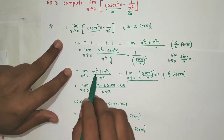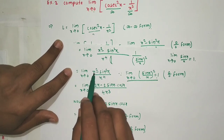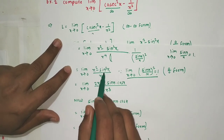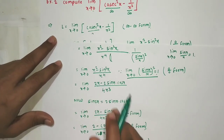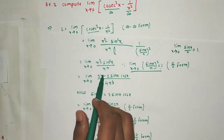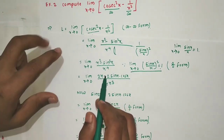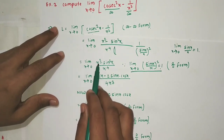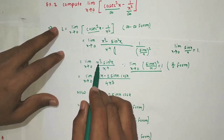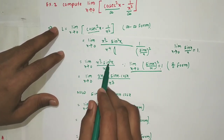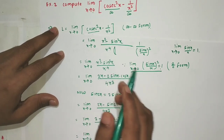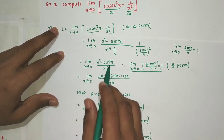After the adjustment, we have [x² - sin²x] / x⁴, multiplied by (sin²x/x²) which tends to 1. So the problem reduces to finding limit x→0 of [x² - sin²x] / x⁴, which is still 0/0 form. We apply L'Hôpital's rule: derivative of numerator is 2x - 2sin(x)cos(x) = 2x - sin(2x), and derivative of denominator is 4x³.